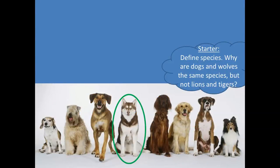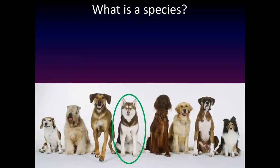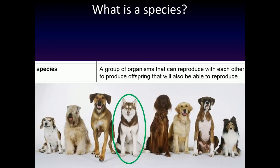Define species. Why are dogs and wolves the same species but not lions and tigers? Dogs and wolves can breed with each other to produce offspring, and this offspring is also fertile, so it can also reproduce. So this Labrador-wolf, which is the product of the dog and the wolf, is able to also have offspring. Species is therefore a group of organisms that can reproduce with each other and then the offspring is also able to reproduce.